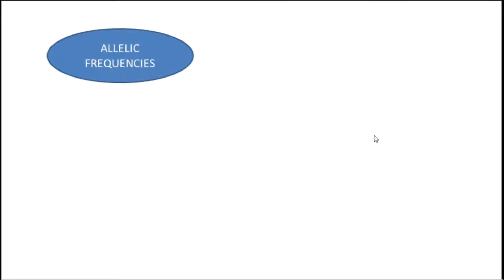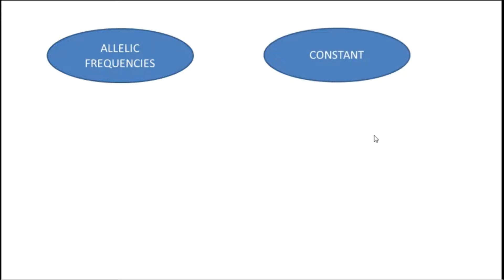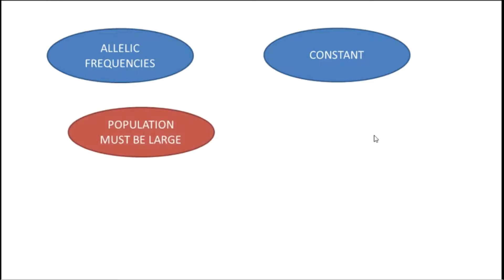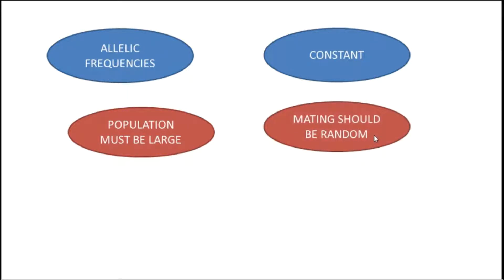The definition says that allelic frequencies remain constant if certain conditions are fulfilled. The first condition is that the population must be a large population, so it is applicable only to large populations. The second condition is that mating should be random, meaning there will be no mating choices or biases in the population. Mechanisms that disturb random mating, such as sexual selection, must not occur.